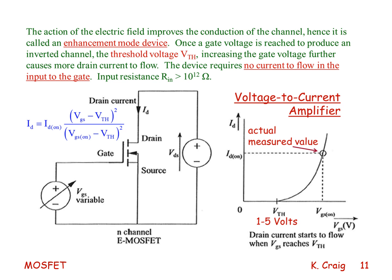Once a gate voltage is reached to produce an inverted channel — that voltage is the threshold voltage V sub Th — increasing the gate voltage further causes more drain current to flow from the drain to the source. The device requires no current to flow into the gate, as the input to the gate has a resistance that is almost infinite.